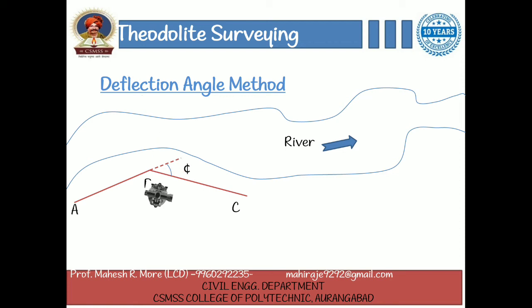The deflection angle phi is the average value of the angles obtained from vernier A and vernier B. Similarly, the other deflection angles phi 1 and phi 2 are measured. A field book is prepared in which the deflection angles and offsets are clearly noted.